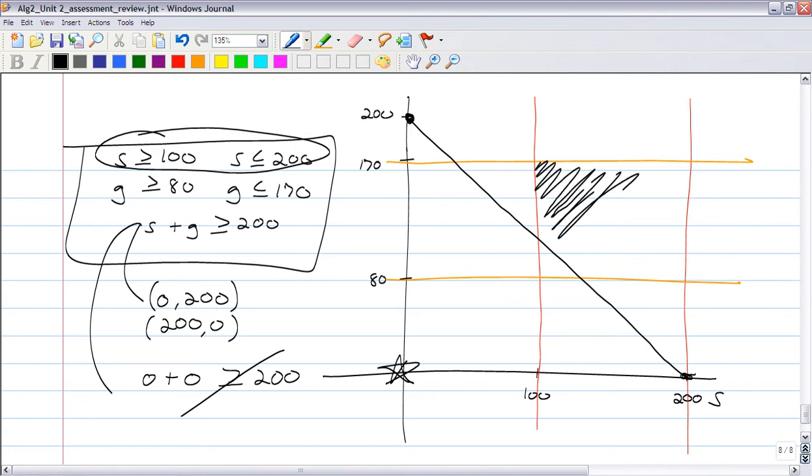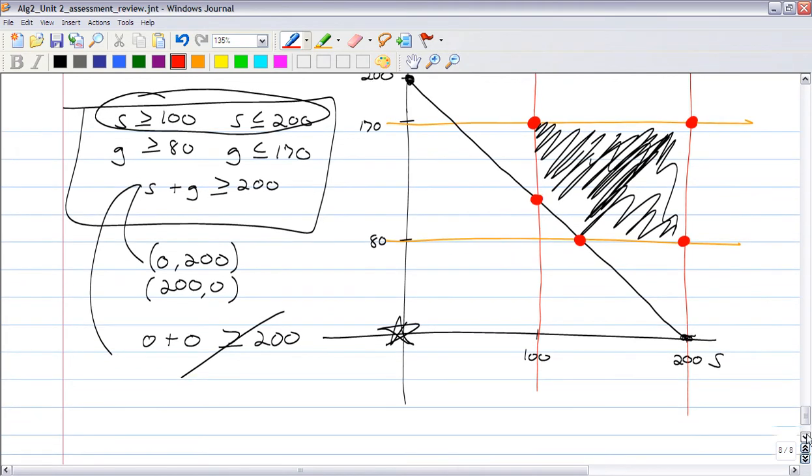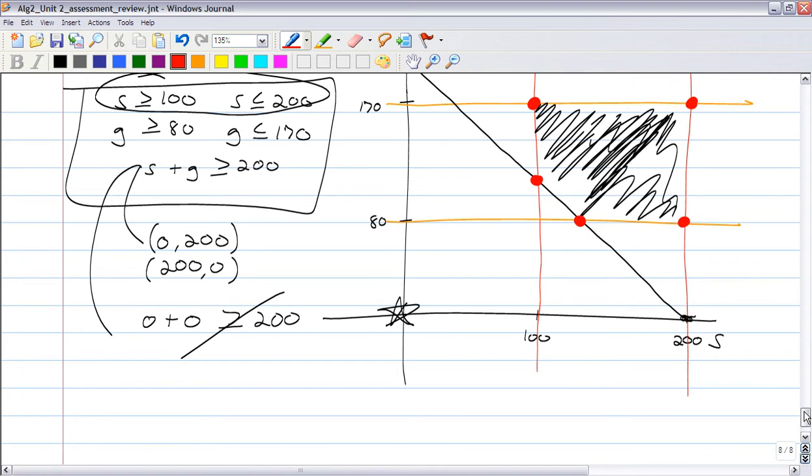So your feasible region ends up being in here. So as far as your test points go, 1, 2, 3, 4, 5. Those are your five test points. Those are the ones you'd plug into your profit equation. Now we've got to figure out, though, what the coordinates of those test points are.